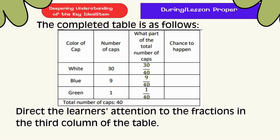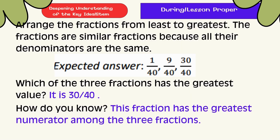The completed table is as follows. Direct the learners' attention to the fractions in the third column of the table. Arrange the fractions from the least to greatest. The fractions are similar fractions because all their denominators are the same. The expected answer is 1 over 40, 9 over 40, and 30 over 40. Which of the 3 fractions has the greatest value? It is 30 over 40. How do you know? This fraction has the greatest numerator among the 3 fractions.